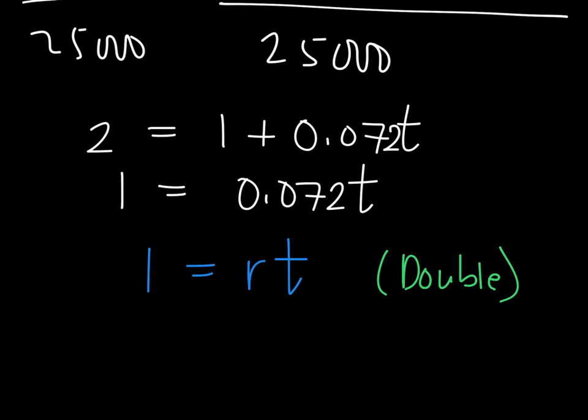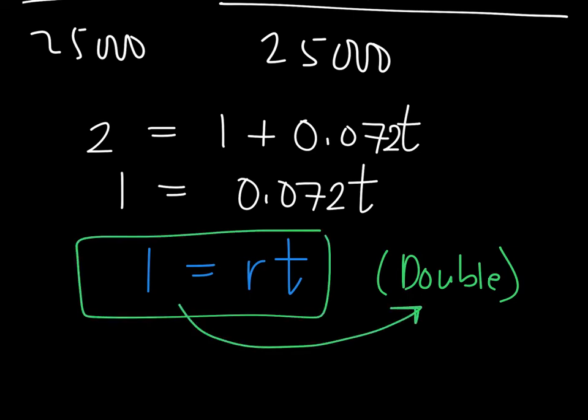So you can do the long way, or you can do the shorter way, that's 1 equals RT, to find the time. Again, this is used only when the amount or the time is asked when the amount is already doubled its value.